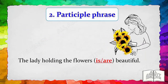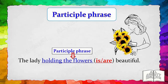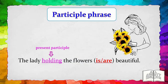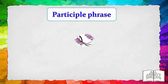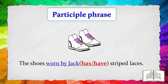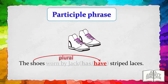Let's look at some example sentences. 'The lady holding the flowers is beautiful.' 'Holding the flowers' is a participle phrase starting with the present participle 'holding.' The lady is a singular subject; therefore, it takes the singular verb 'is.' By removing the participle phrase, we can determine: 'the lady is beautiful.' Hence, 'the lady holding the flowers is beautiful.' Another example: 'The shoes worn by Jack have striped laces.' 'Worn by Jack' is a participle phrase starting with the past participle 'worn.' Therefore, 'the shoes have striped laces' — 'the shoes worn by Jack have striped laces.'